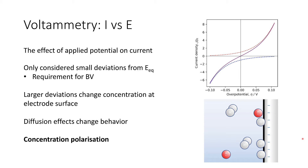We start to get a build-up of particular species at electrodes, which changes the current that we can draw from them. From this, we can infer a great deal about the kinetics of the electrode and gain insight into the processes of the reactions going on.